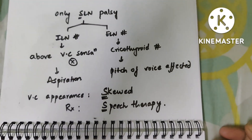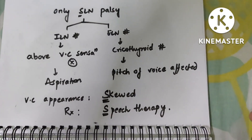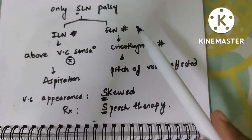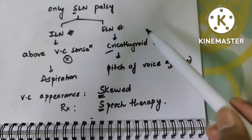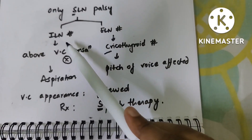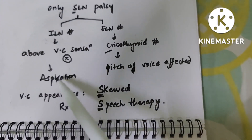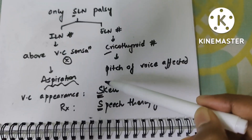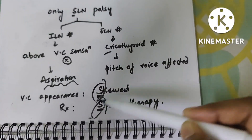For SLN palsy specifically: when the ELN is gone, the cricothyroid — which is the exception supplied by the external laryngeal nerve — is affected, so the pitch of the voice is reduced. When the ILN is gone, sensation above the vocal cord is lost, leading to aspiration. On indirect laryngoscopy, the vocal cords appear in a skewed position, and the treatment is speech therapy.